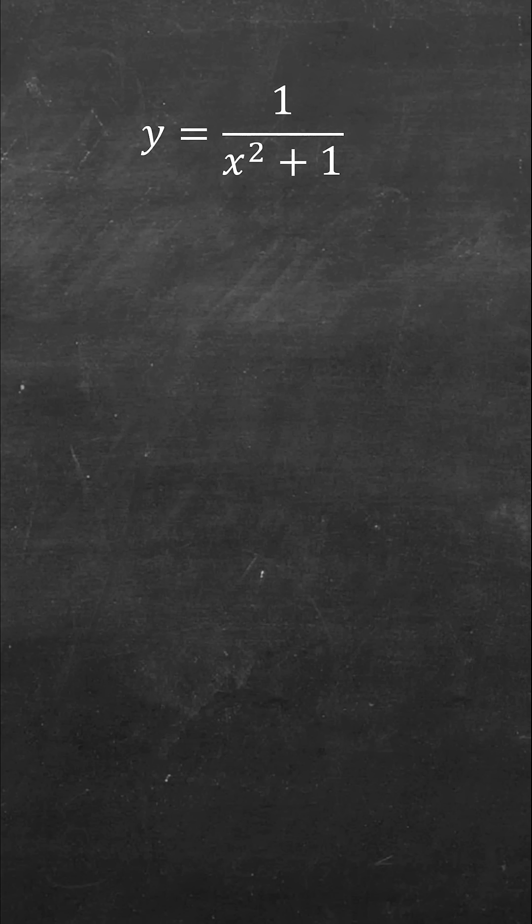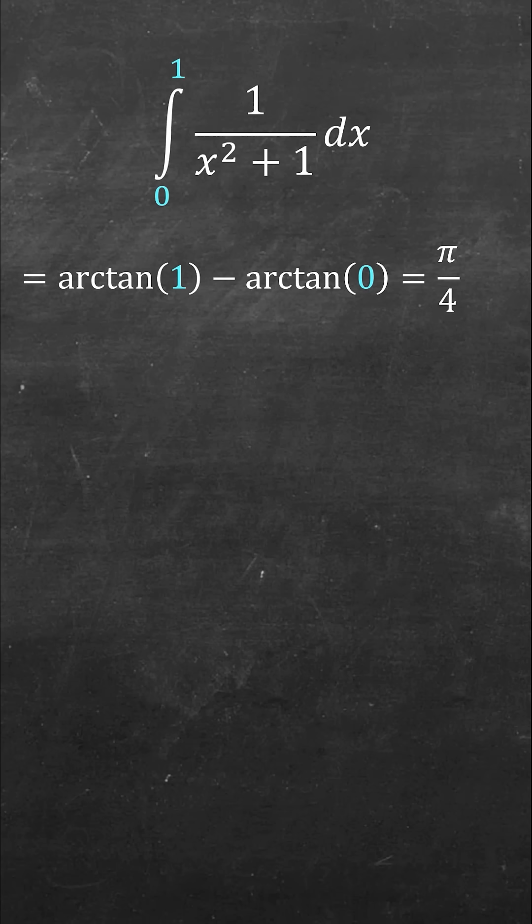Now, any good mathemagician can make pi appear, so let's integrate from 0 to 1. And the calculus students among you will recognize that this is the derivative of arctan, and so evaluating at 0 and 1 gives the value of pi over 4.